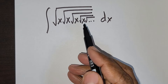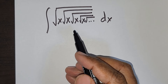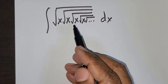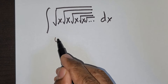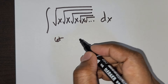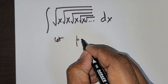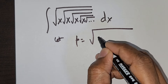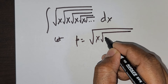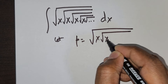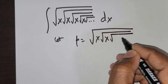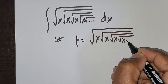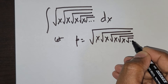We got a lovely question — it's a nested square root question, and we expect you to integrate this. Foremost, what I would do is let P be equal to the root of x times root of x times root of x times root of x, and it goes on.